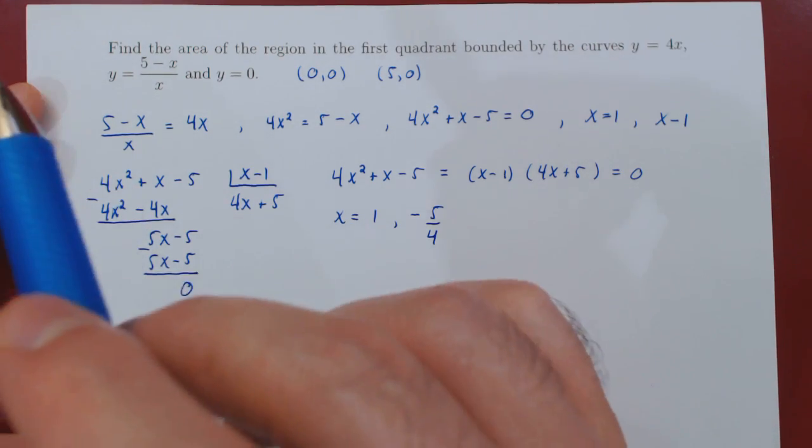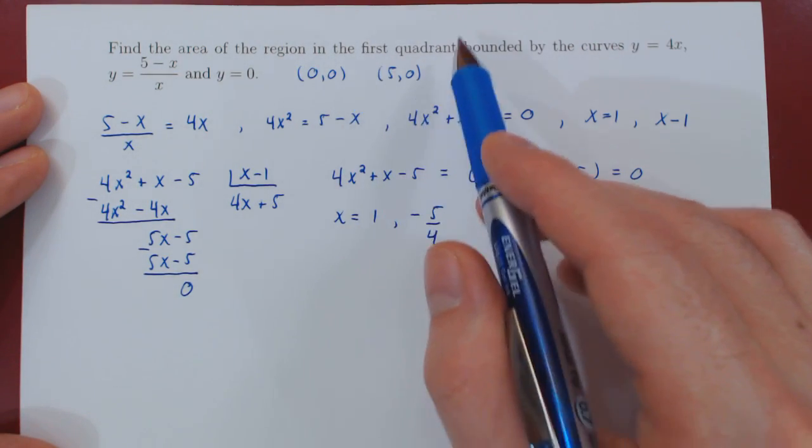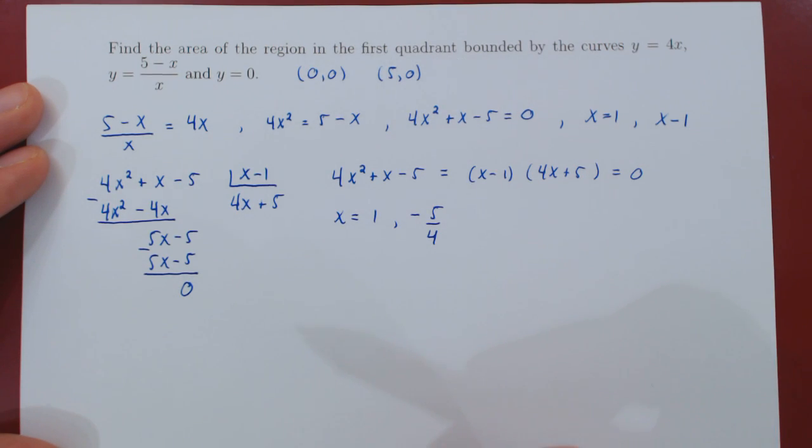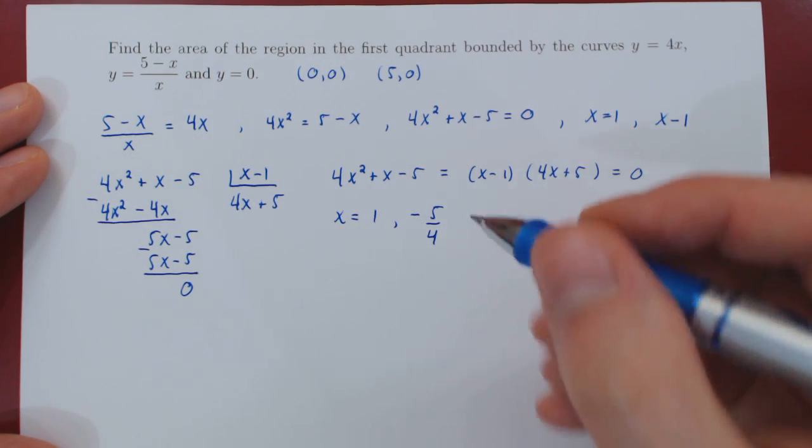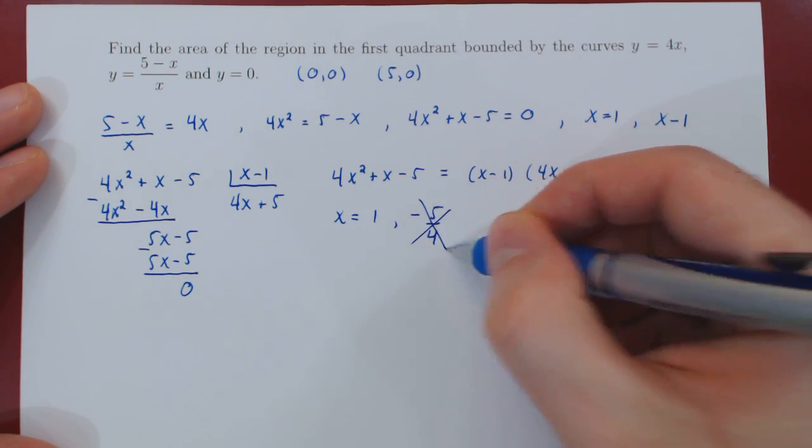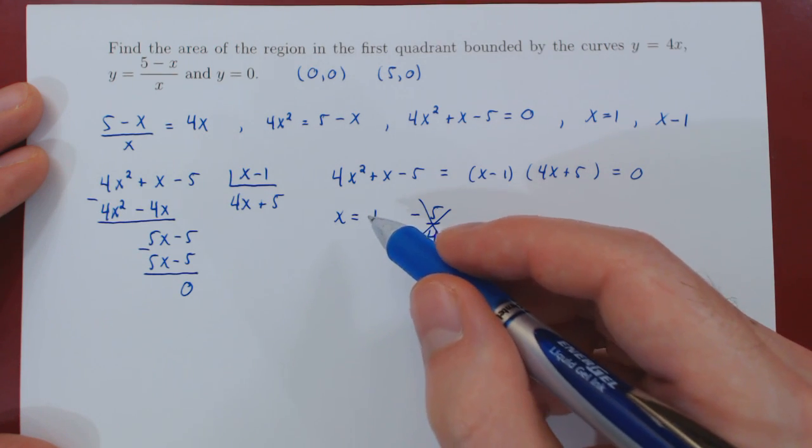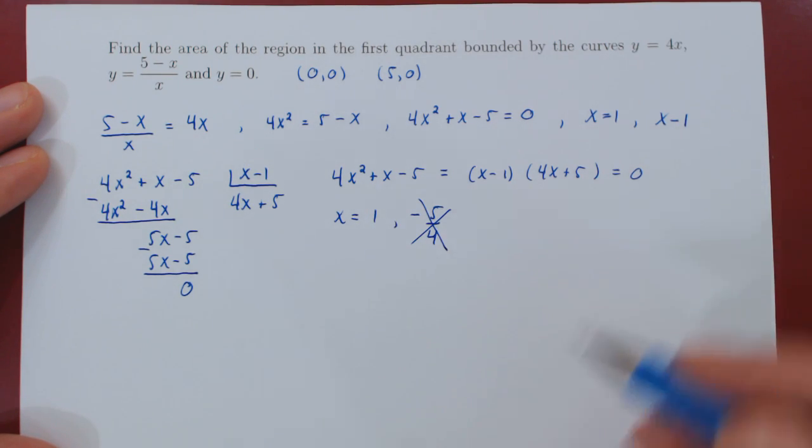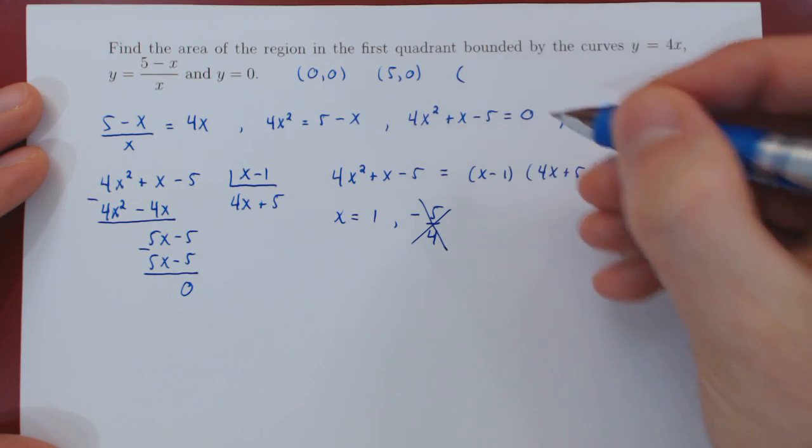But if you recall, we said to find the area of the region in the first quadrant of the xy plane. That's where x is non-negative, so we reject the negative value of x and we're left with x equals 1 as our only other solution.